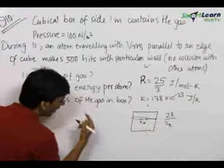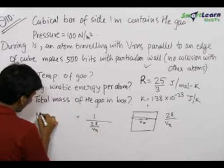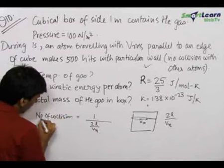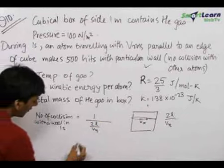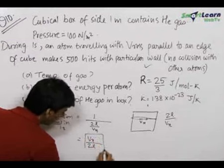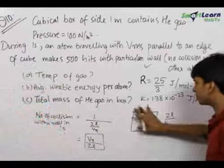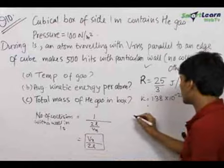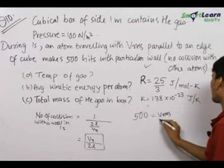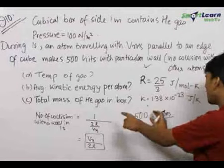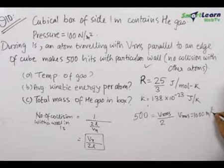The number of collisions made with a particular wall in one second is equal to 1 divided by (2l / v_x), which equals v_x upon 2l. This is the velocity perpendicular to the wall and parallel to one of the edges. We have been given that the number of collisions per second equals 500 and v_x equals v_rms. Therefore, 500 = v_rms / (2 × l), where l = 1 meter. So v_rms comes out to be 1000 meters per second.